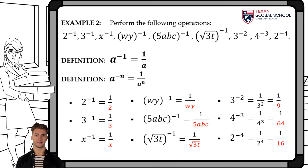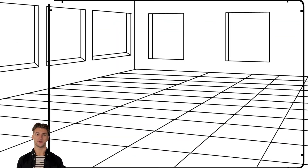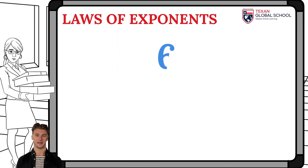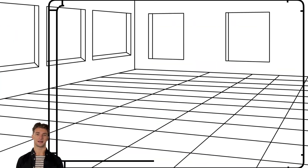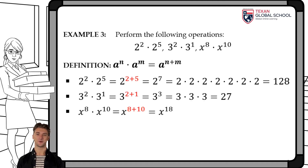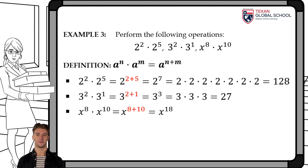The following definition indicates that the product of two numbers with the same base a and positive exponents is equivalent to simplifying the base and making the sum of its exponents. For example, 2 squared times 2 to the fifth power can be simplified with this definition. Add its exponents, 2 plus 5, and it reduces to a single base. In this way, we have 2 to the seventh power, which develops to obtain 128.